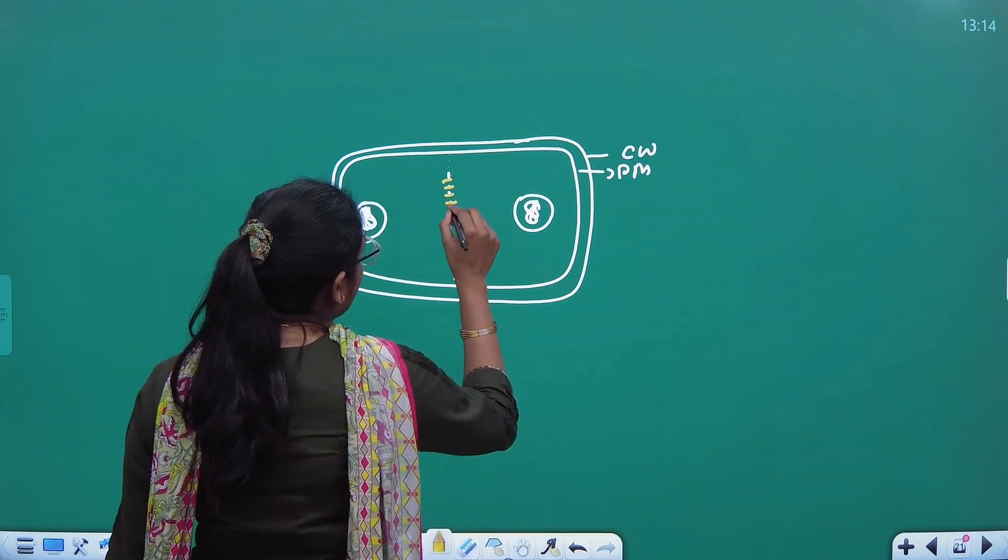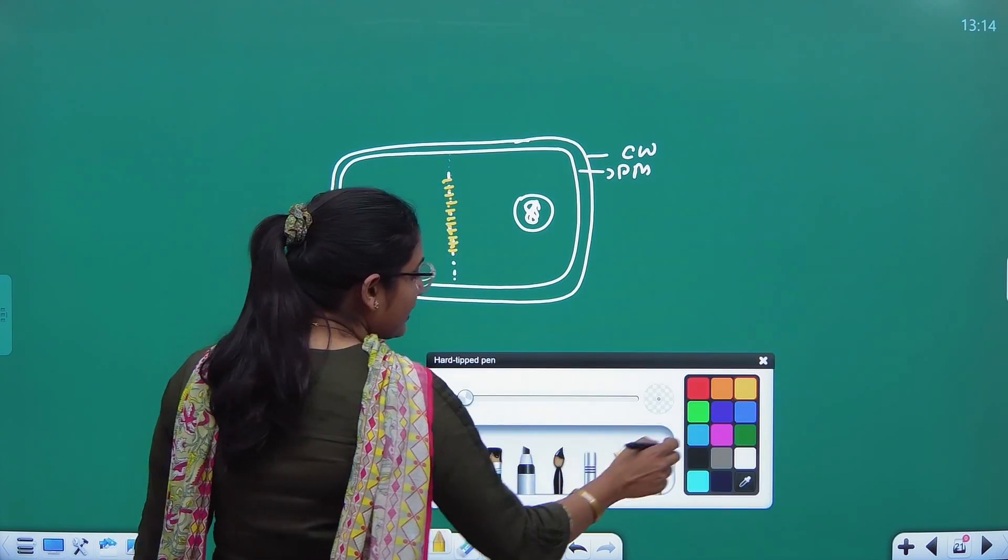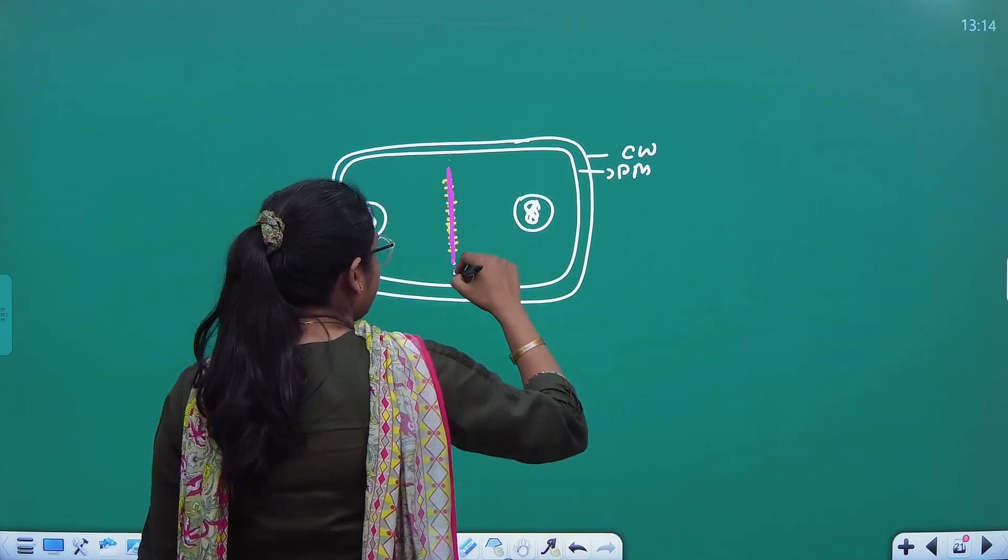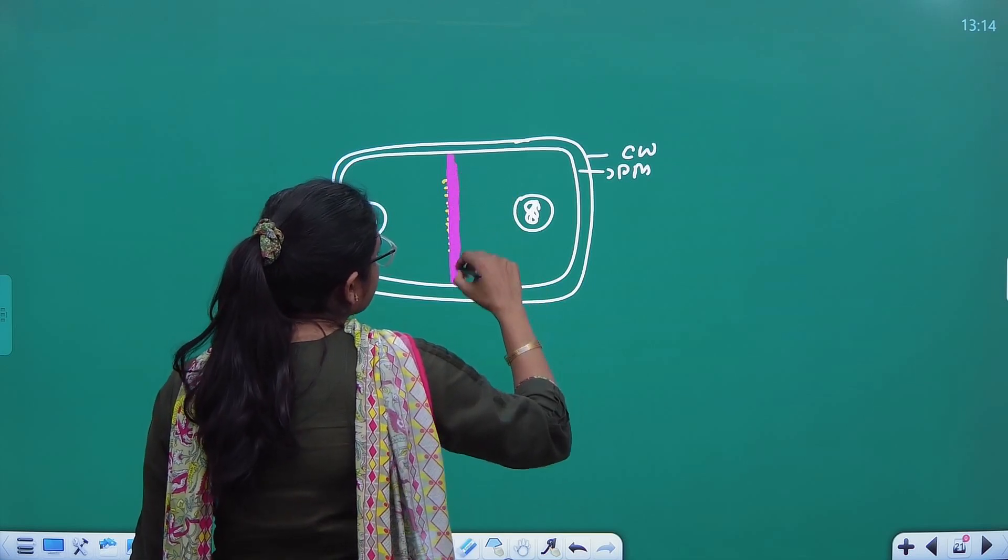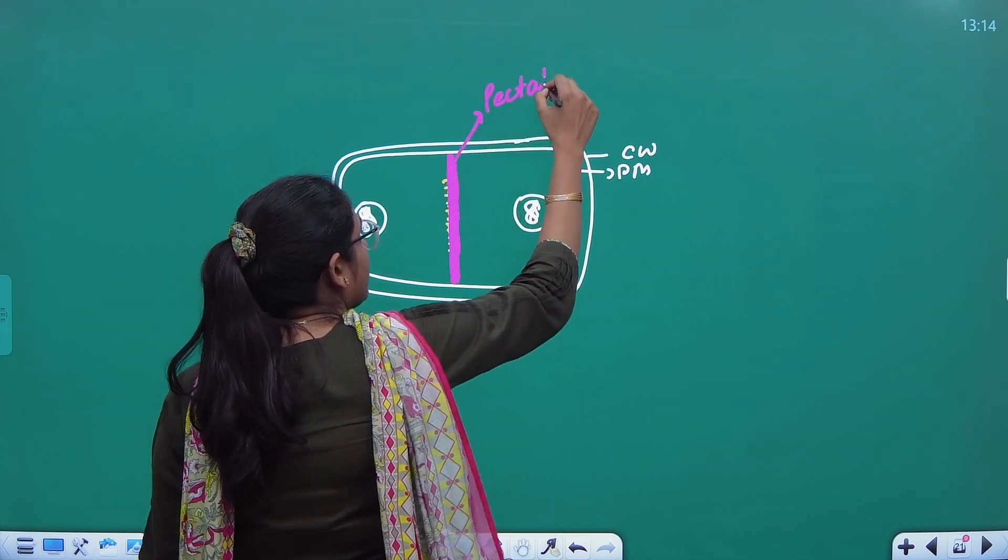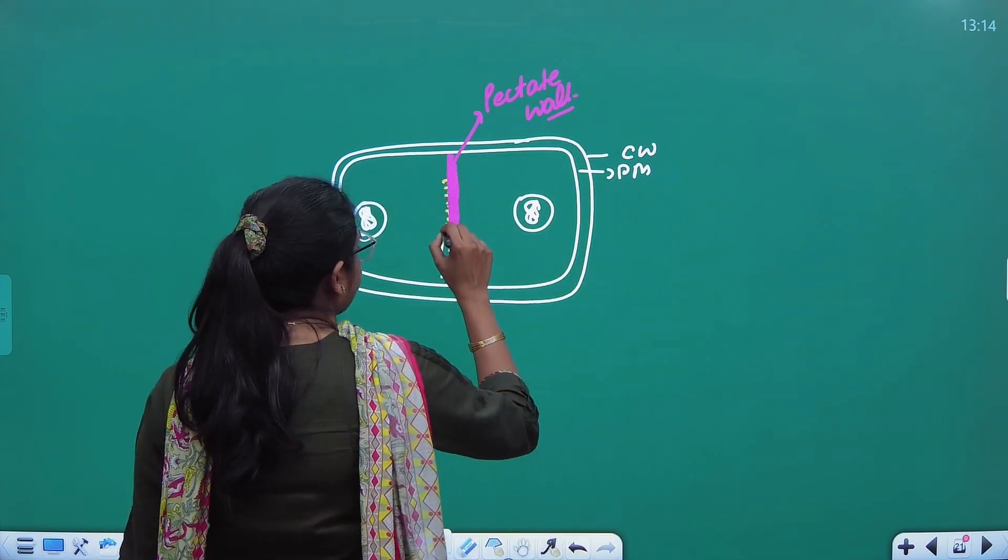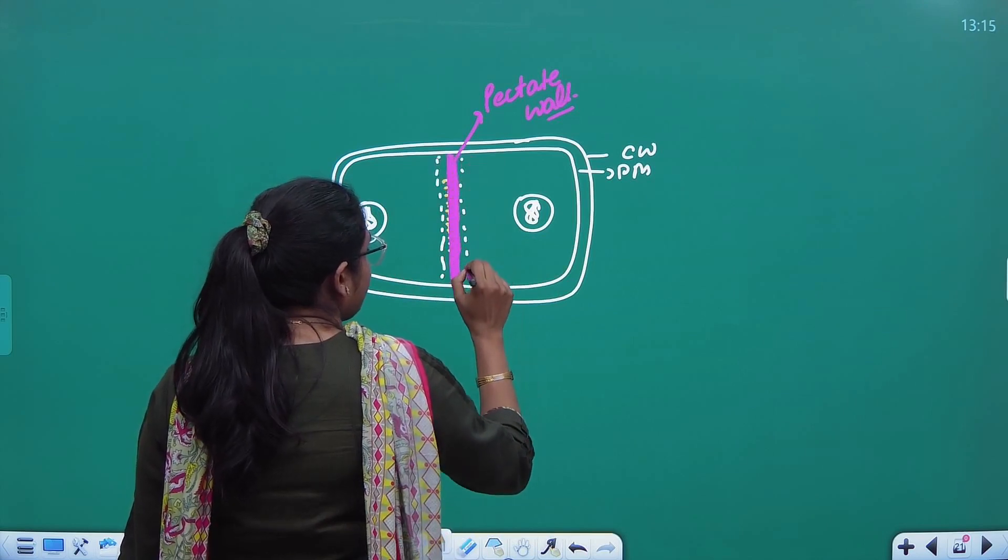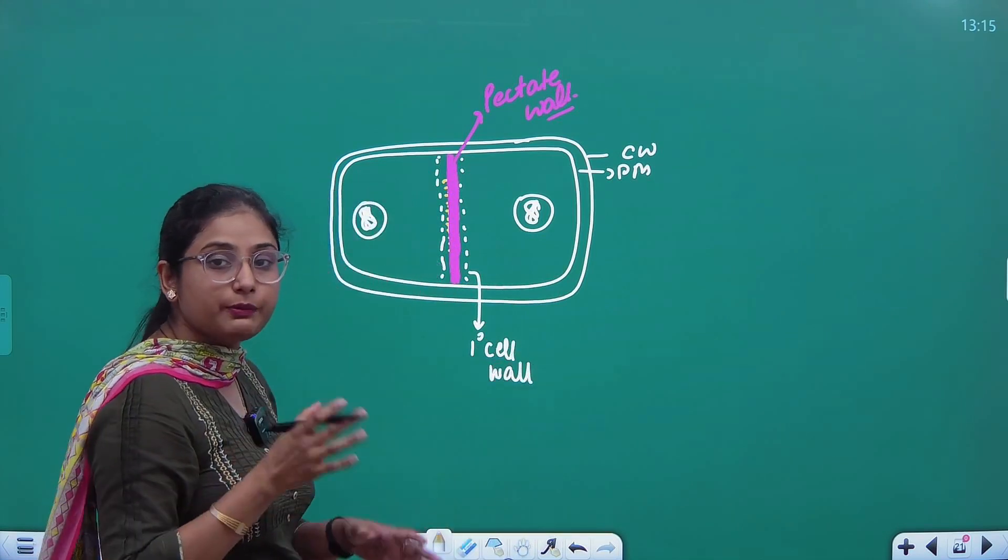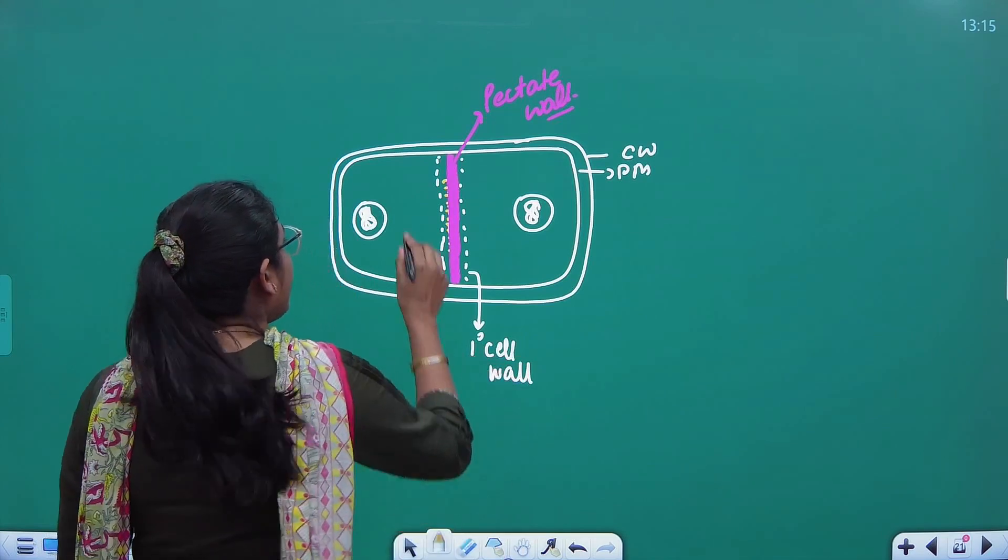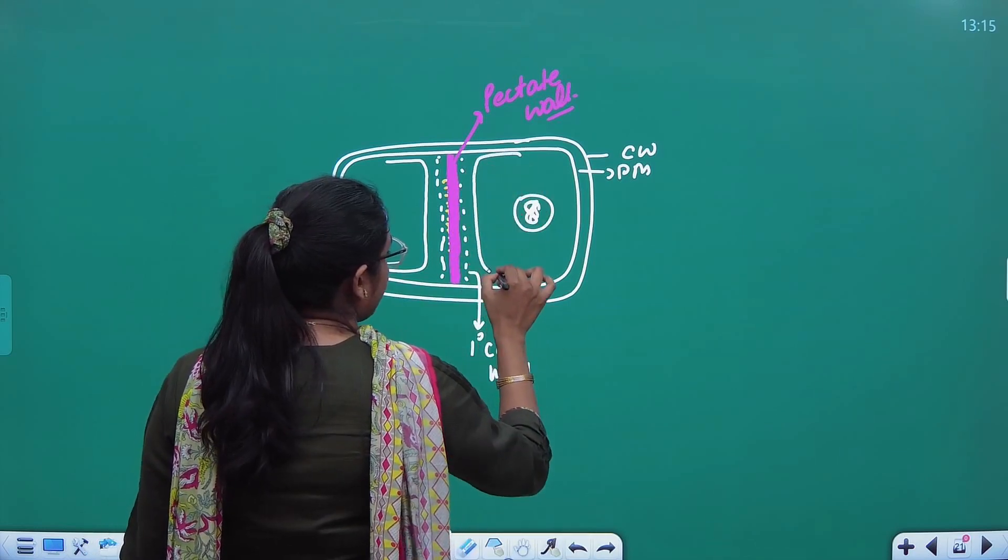Golgi apparatus creates pectin and makes a pectate wall. This is the pectate wall which our Golgi has made. Now, the pectate wall starts deposition with cellulose and this is the primary cell wall. Later on, the cell will mature, this primary cell wall grows further and tries to create a thick wall, which we call secondary cell wall.